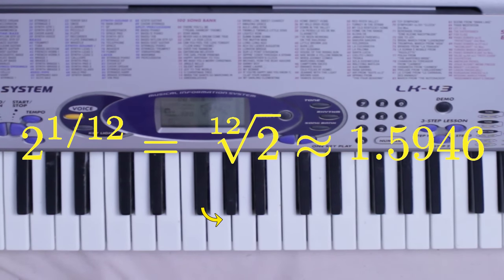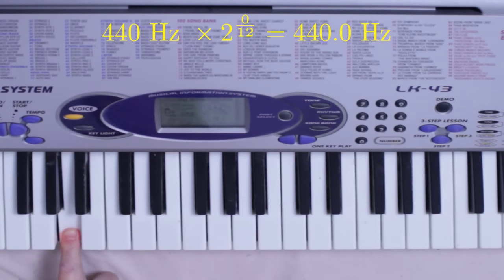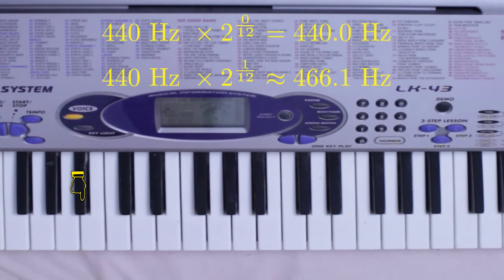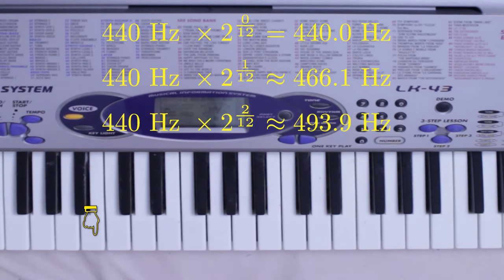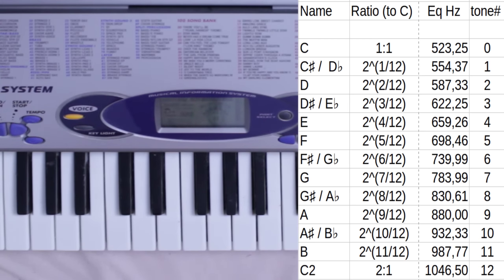This means that if this note, A4, is 440 Hz, then this note, A sharp 4, is 440 times 2 to the 1/12th power, approximately 466 Hz. And this note, B4, is 440 times 2 to the 2/12th power, approximately 494 Hz. And so on, we can define the exact frequency for every single note on the keyboard.